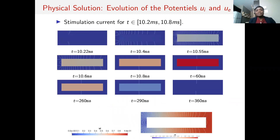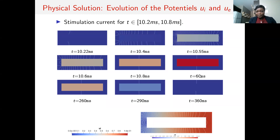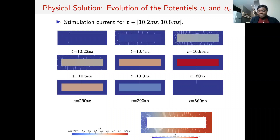Now we track the evolution of the potential inside and outside the cell. We stimulate the cell for 0.6 milliseconds. Here marks the beginning of the stimulation, and here marks the end. We can see that it seems as if the cell depolarizes simultaneously. From time t equal to 60 milliseconds to t equal to 290 milliseconds, the cell is slowly returning to its resting state, and by the end it is fully at rest. Here is the behavior of the extracellular domain during the stimulation.